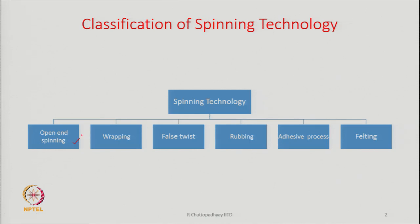The first one is open end spinning. The next one is wrapping, that is spinning a yarn by a process known as wrapping. The next one is false twisting. We produce a yarn by the process of false twist, that is by generating false twist and making the fibers to wrap around the yarn. The other one is rubbing. By rubbing action, we try to insert twist into the yarn.